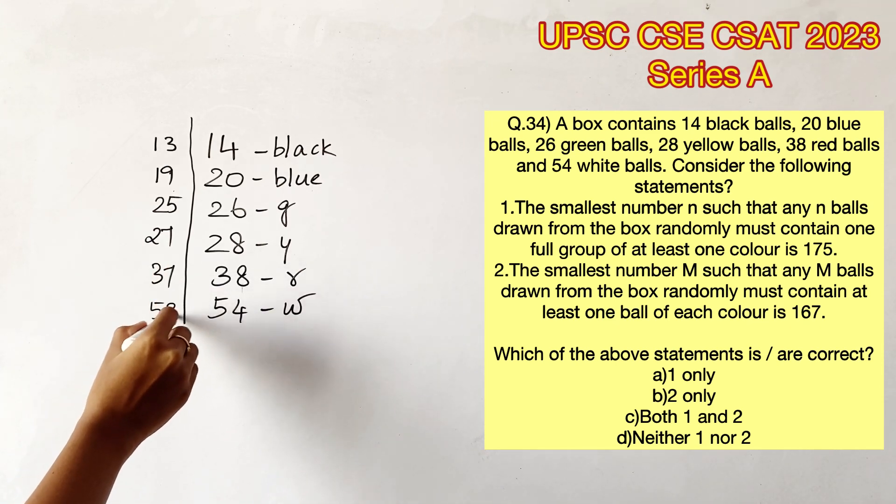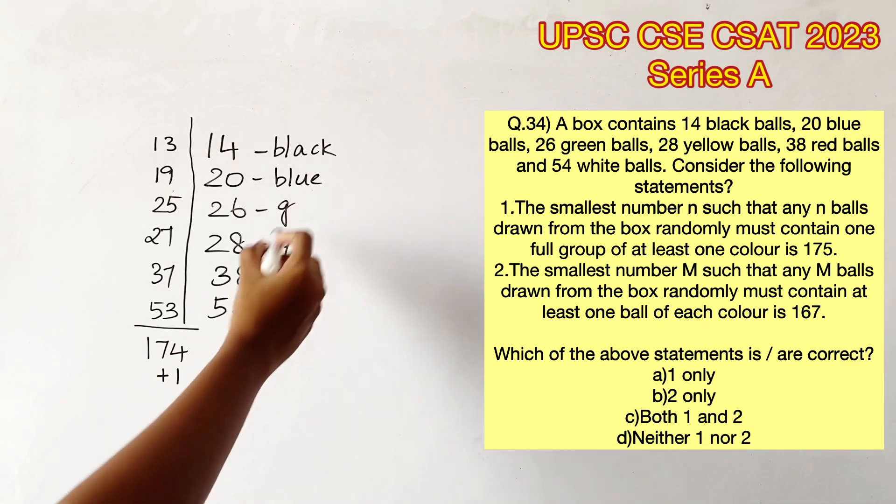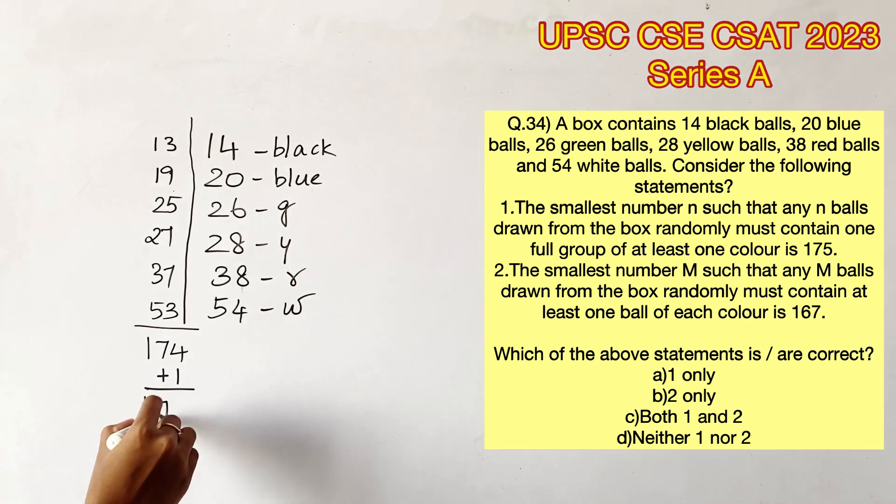So the next ball we pick would contain one full group of at least one color. So 175 would be the smallest number that would definitely solve this condition. Therefore, the first statement is right.